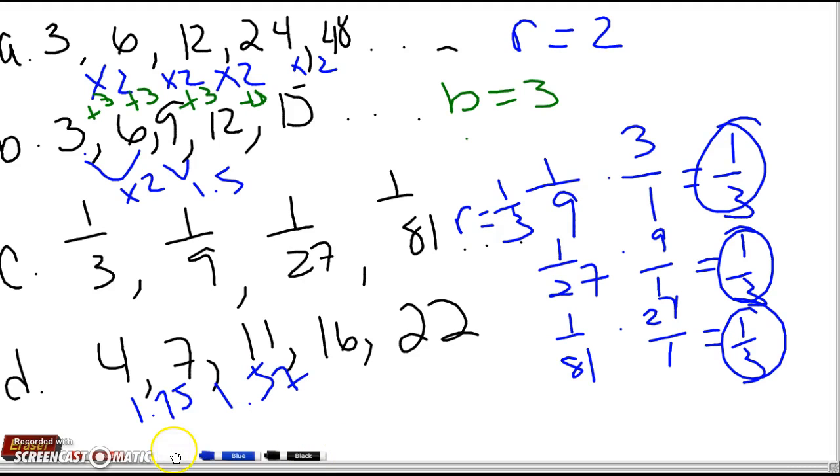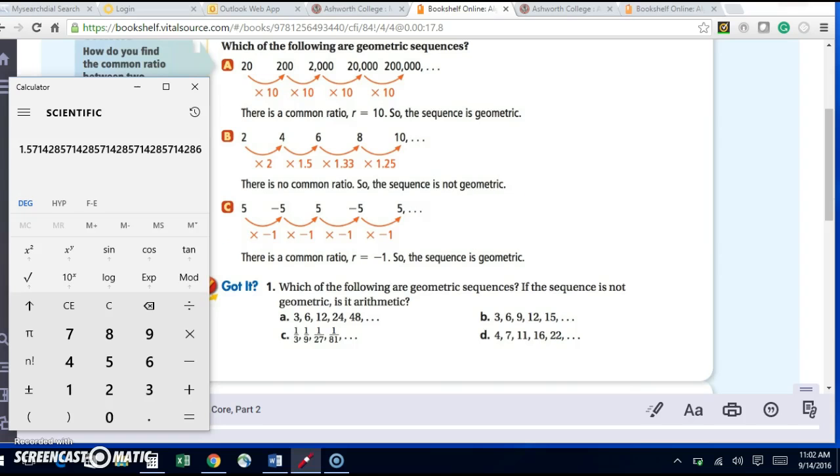Let's see. When I add from 4 to 7, I get plus 3. From 7 to 11 is plus 4. So I can stop there. This is plus 5. So I know it's not arithmetic, nor is it geometric. Let's see if I answered all parts of the question. Yes, I did. I hope this helps.